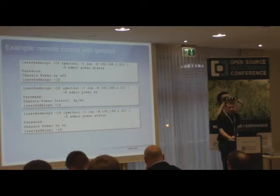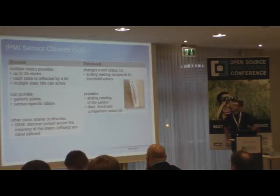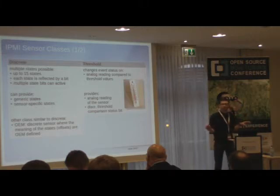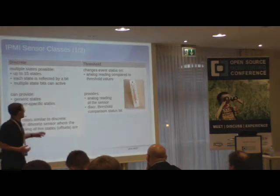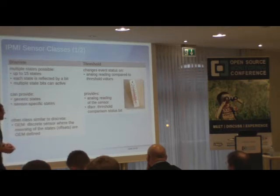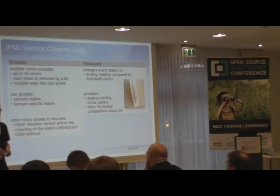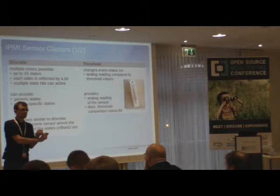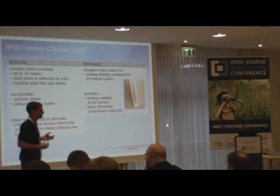When we talk about IPMI sensors, we come to a slide that looks a bit more complicated than before, but for good reason. There are two types of sensor classes within IPMI, which is very beneficial. On the left side are discrete sensors, which have the possibility to use up to 15 different yes/no states. For example, when you have a power supply, you don't get a numeric value — you get information like: the power supply is present, has power on the inlet, and is working correctly. So you have up to 15 different states available.